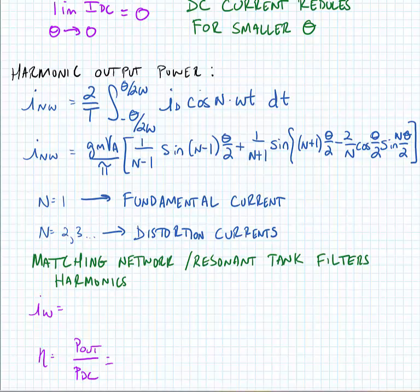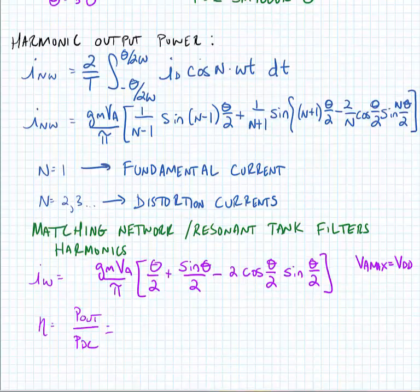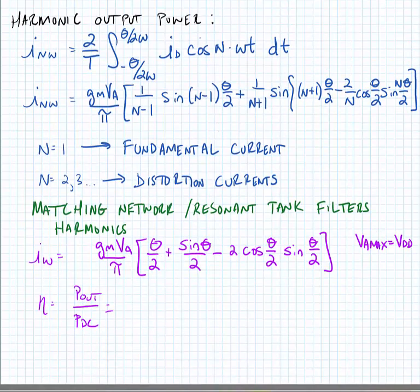Now we have a matching network or a resonant tank at the output of the amplifier that filters the harmonics. Finding the fundamental current, we have the following expression, and we know that the maximum amplitude of the sine wave that the input is VDD.